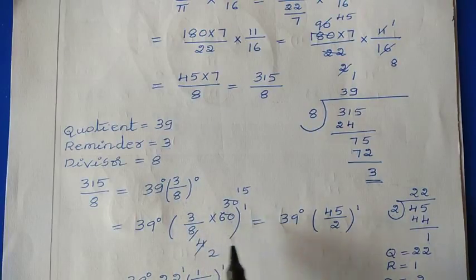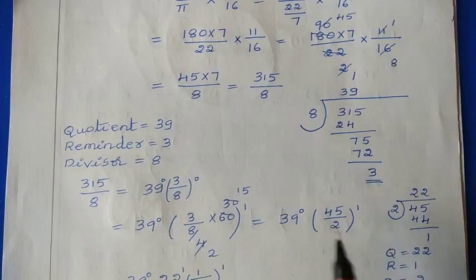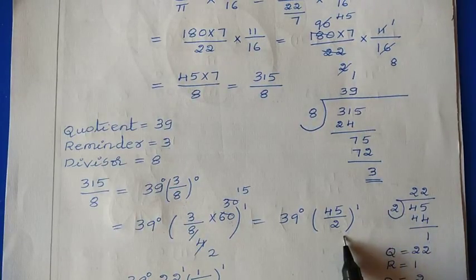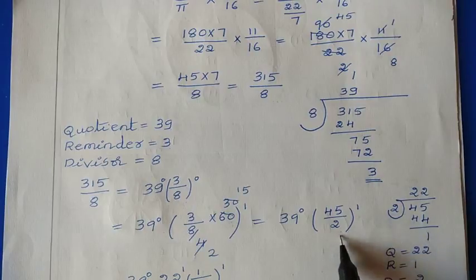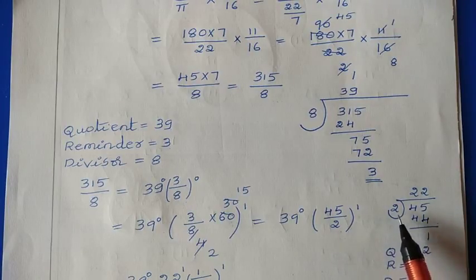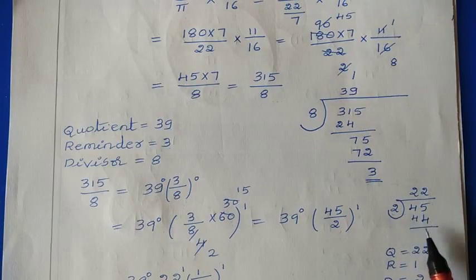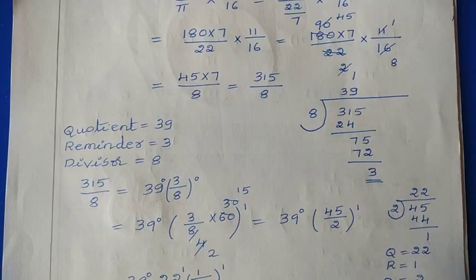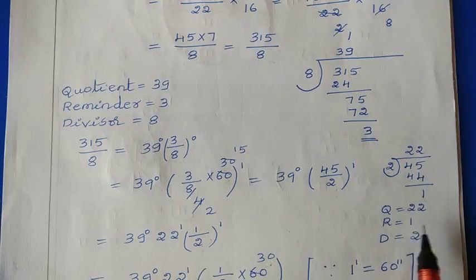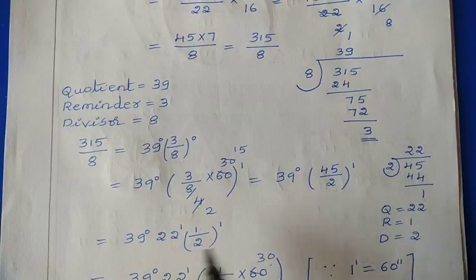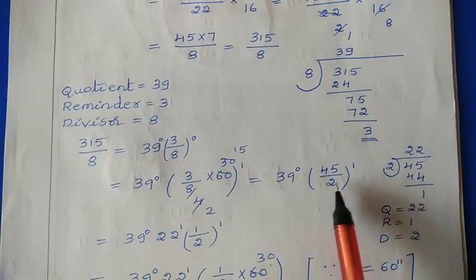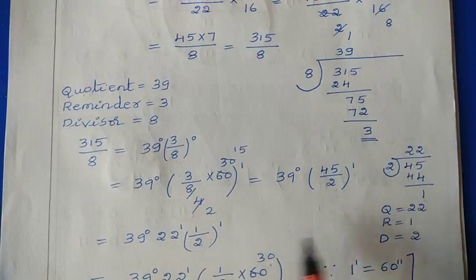So: (3/8) × 60 = 45/2 minutes. But this is still a fraction, so again perform the division: divide 45 by 2. Quotient is 22, remainder is 1, divisor is 2. So we get 22 minutes. Then the remaining fractional part is 1/2 minute, which is still in fraction form, so convert it to seconds.